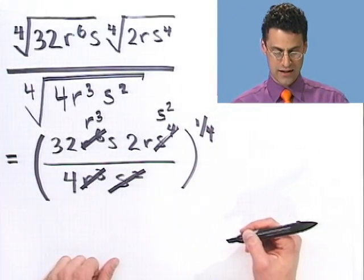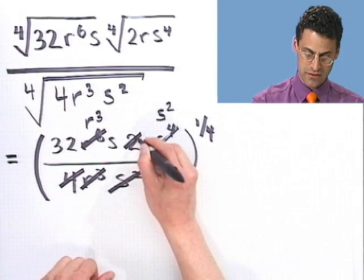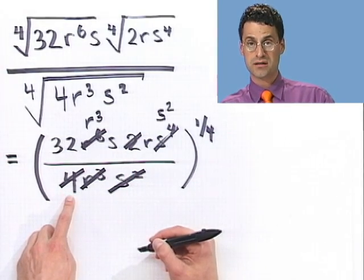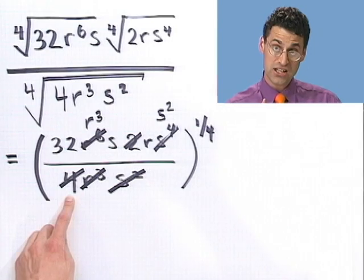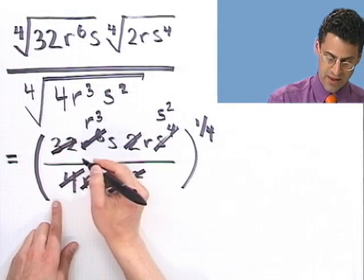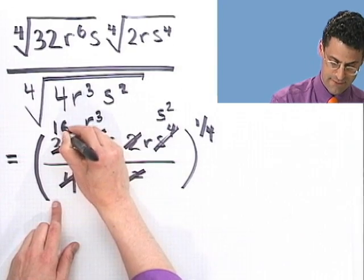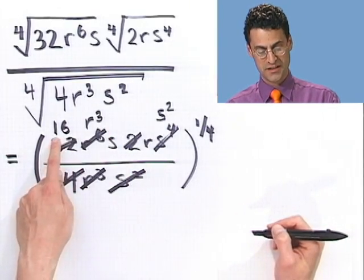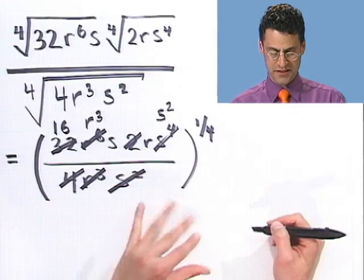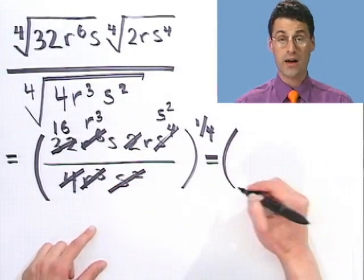By the way, when doing these hideous problems, write very large and write neatly. If you write tiny, 2's become 3's and 3's become 9's. Write large and you'll be amazed at the accuracy you'll achieve. So after canceling I see 16, then r cubed combined with r gives r to the fourth, and s combined with s squared gives s cubed on top, all over 1.